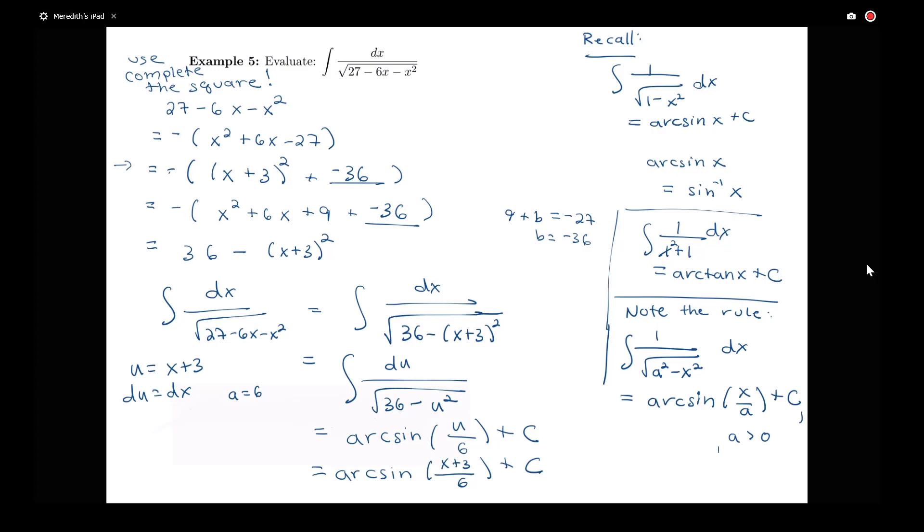So you can see using completing the square together with knowing this general rule for the integral of something that will lead to an arc sine really simplifies that problem a lot. Again, you could have done, if you didn't remember that rule, you could do the technique similar to what we did earlier with some factoring and some additional u substitution to make it look like the square root of 1 minus something squared. But using this general rule speeds up the problem a little bit. So here's another one. Let's get started.